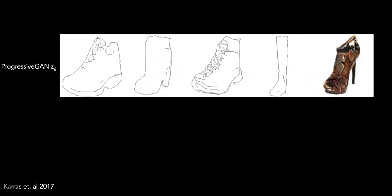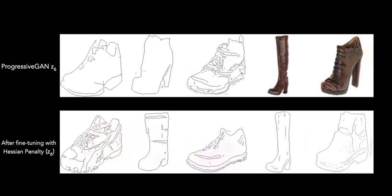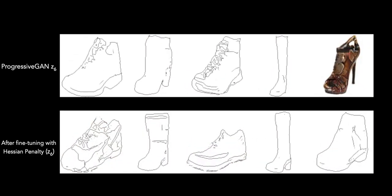Baseline progressive GAN doesn't cleanly disentangle the edge-to-shoe factor variation. However, after fine-tuning with the Hessian penalty, the z6 component does control it.